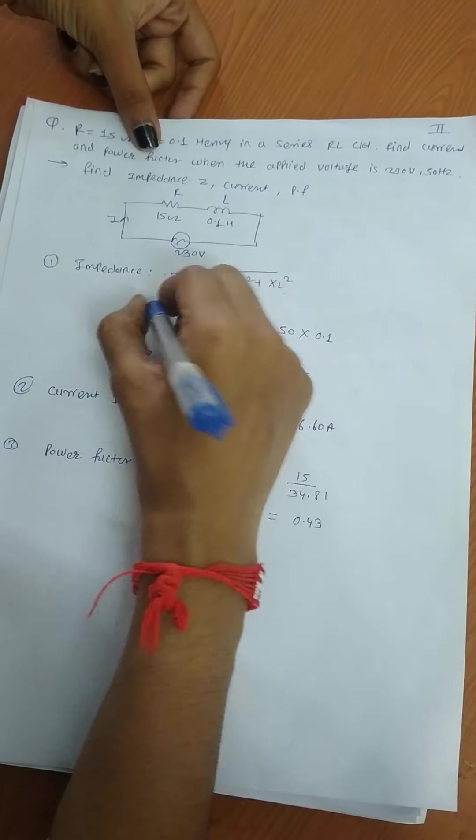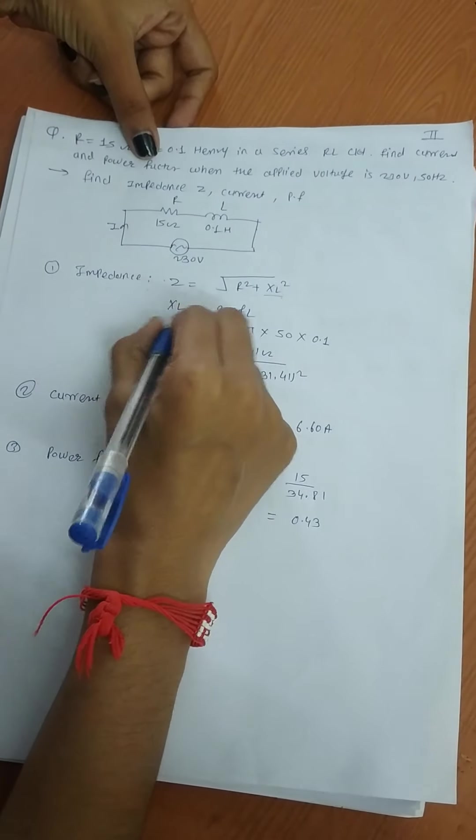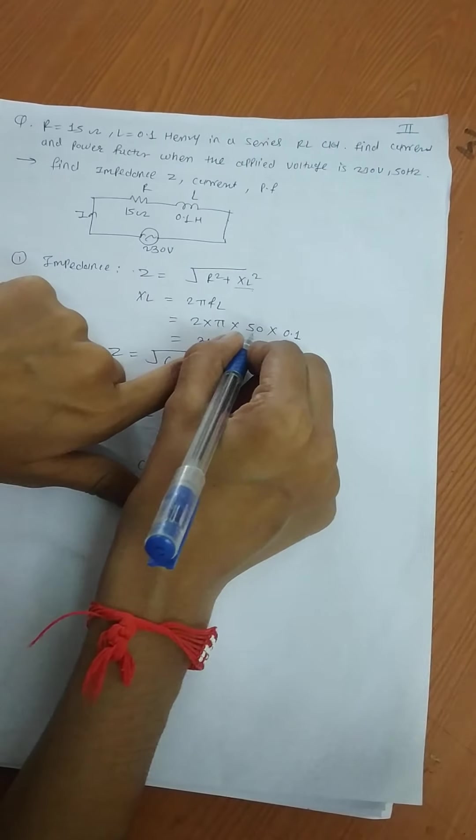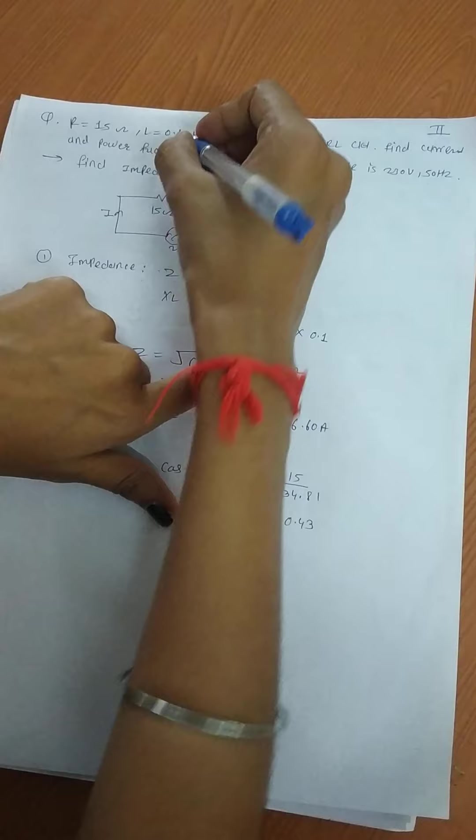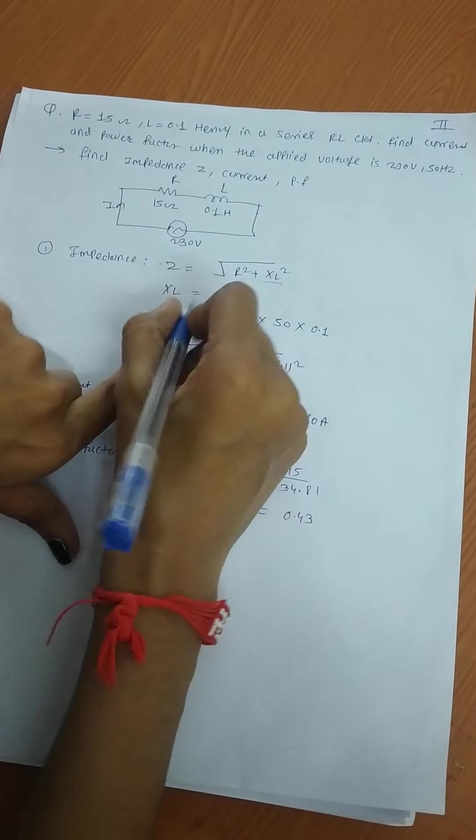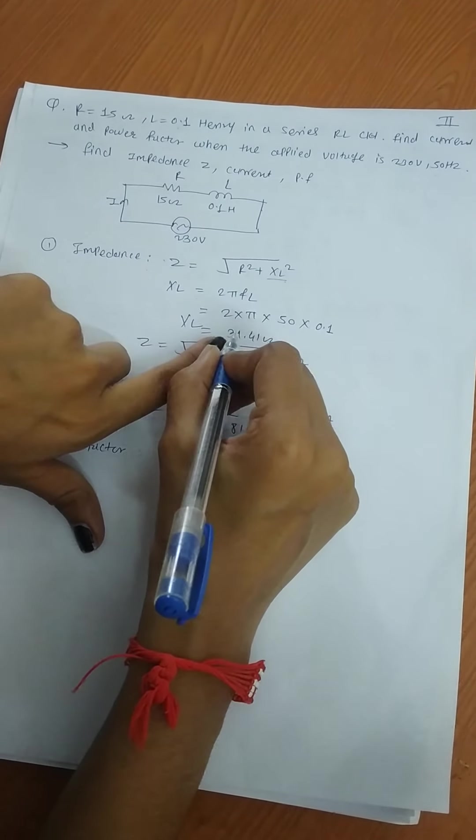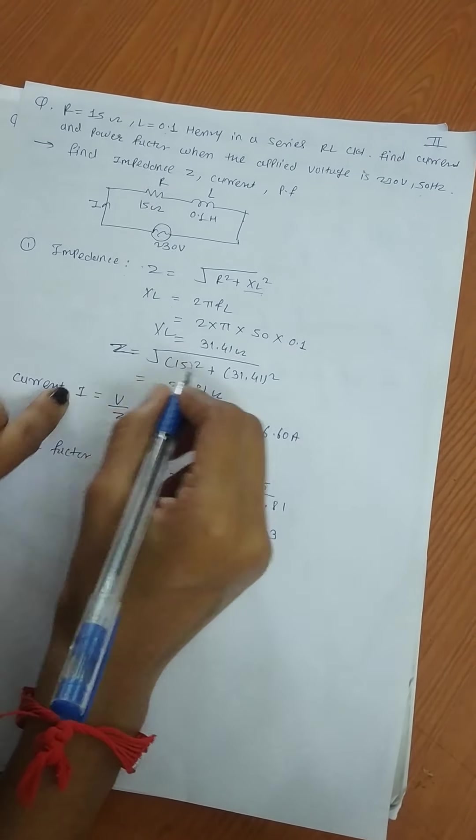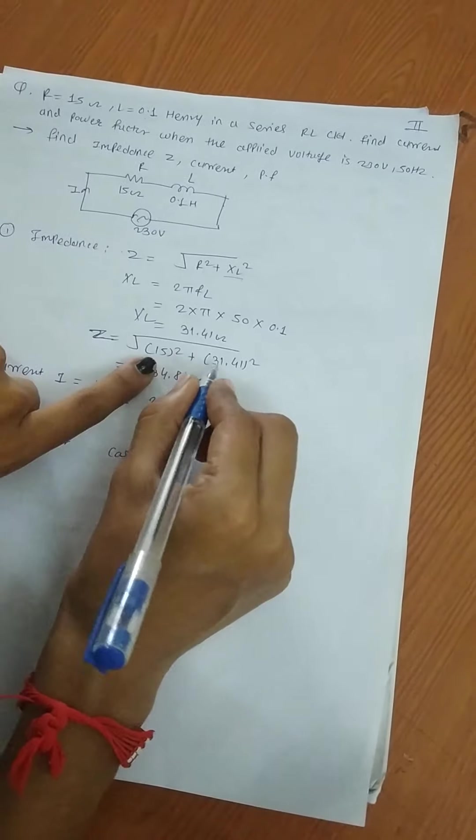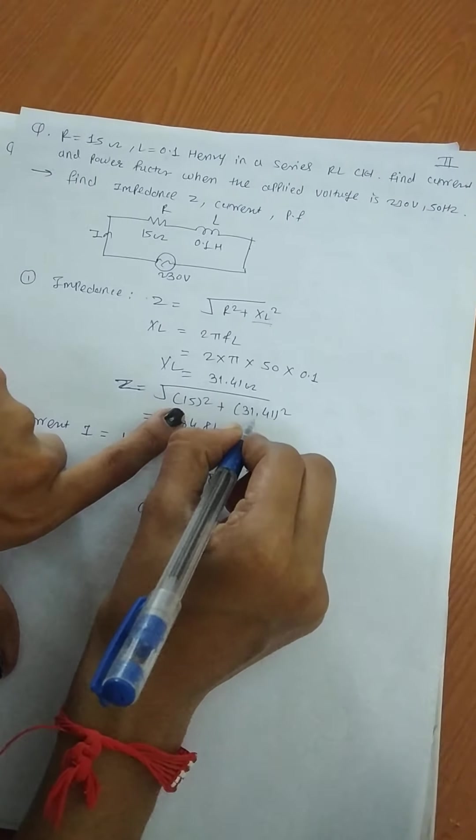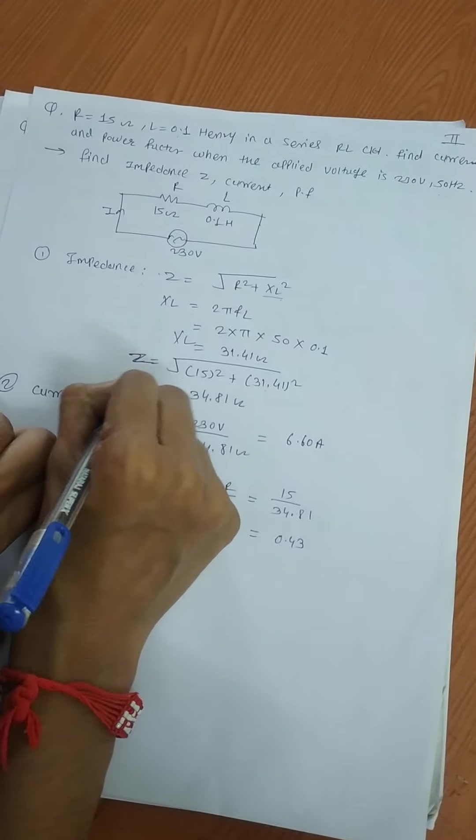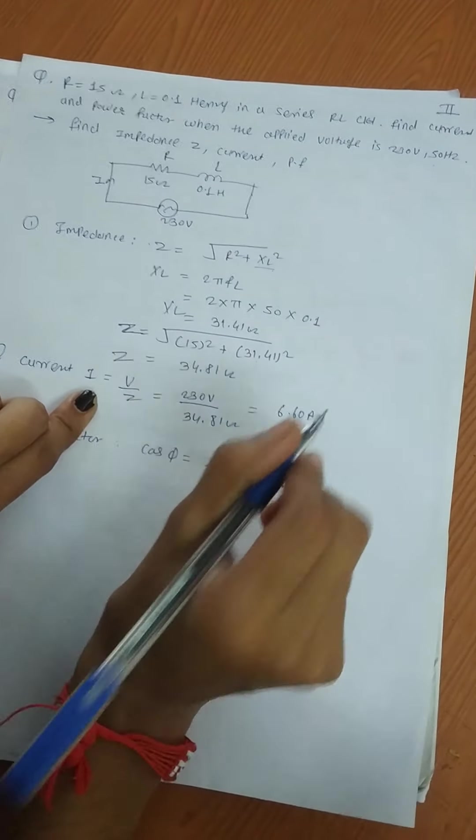XL = 31.41 ohm. Then find |Z| = √(R² + XL²), where the value of R is 50 and XL is 31.41. The impedance is 34.81 ohm.